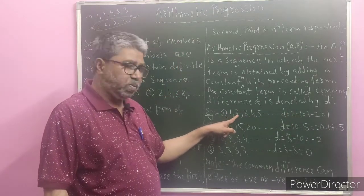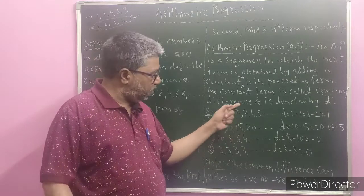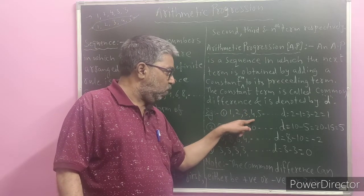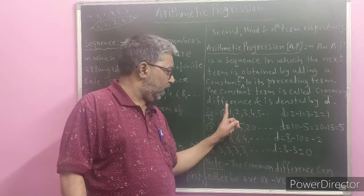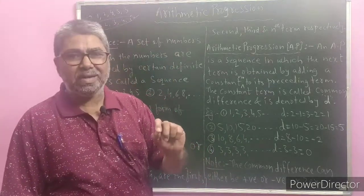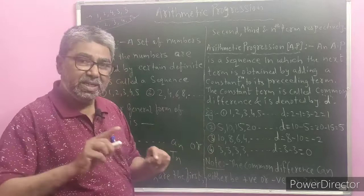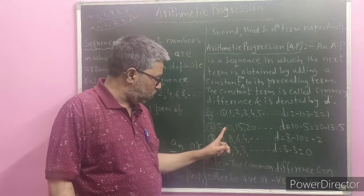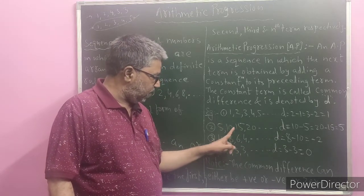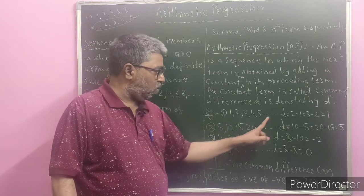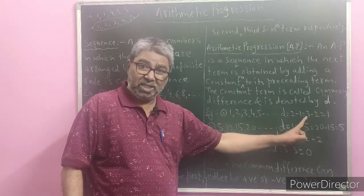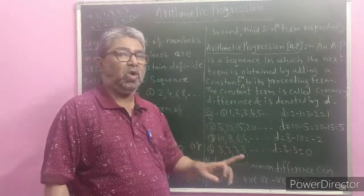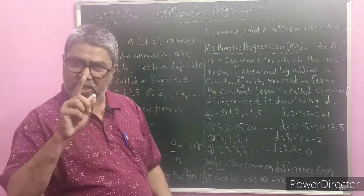If you add 1 to 1, you get 2. If you add 1 to 2, you get the next term 3. If you add 1 to the preceding term 3, you get 4. So in this way, 1, 2, 3, 4, 5, and so on is an example of arithmetic progression. The second example is 5, 10, 15, 20, and so on. Here also, 10 minus 5, or 15 minus 10, or 20 minus 15 always gives 5 — that is the constant number. So this is also one of the examples of arithmetic progression.